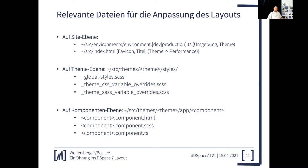Auf der Theme-Ebene begegnen Ihnen drei Dateien: die globalstyles.css, CSS-Variable Overrides und SAS-Variable Overrides. Das sind auf Theme-Ebene die hauptsächlichen Dateien, die Sie anpassen werden. Und jede einzelne Komponente hat ein Template, das aus zwei Dateien besteht: component.html und einer component.css-Datei. Die Komponente selbst wird in der component.ts-Datei definiert.